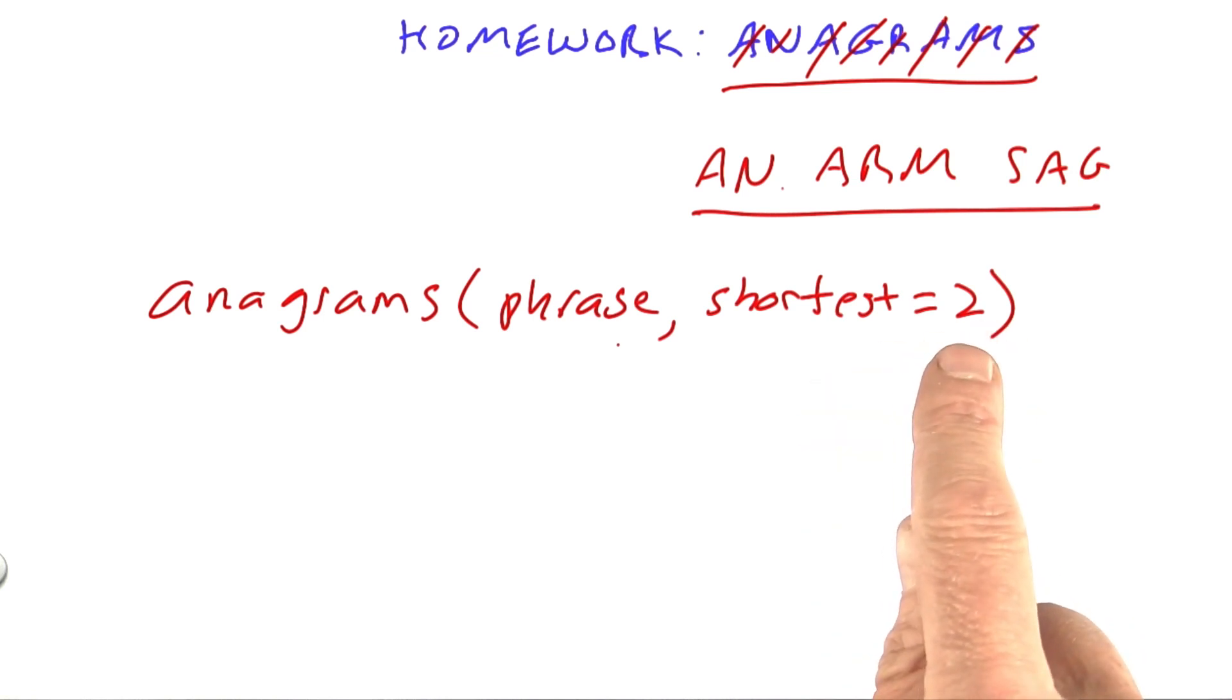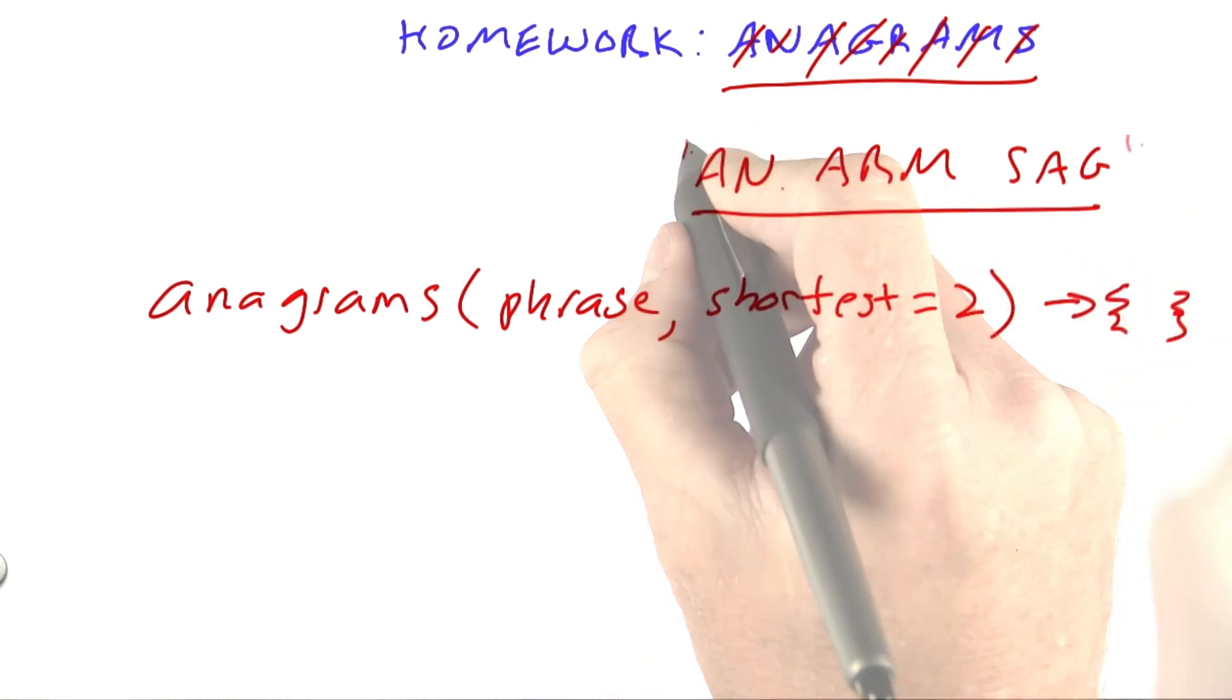If we wanted, we could say we'll only allow three-letter words and up or so on. This is going to return a set of phrases which may be multi-word phrases. We'll be generating all possibilities from the words in the dictionary. These words are all in the dictionary.